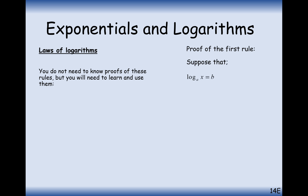We're going to look at the first rule and generate this using the rules of indices. We start by setting log base A of X equal to B, and log base A of Y equal to C. The reverse of this is A to the power of B equals X, and similarly A to the power of C equals Y.